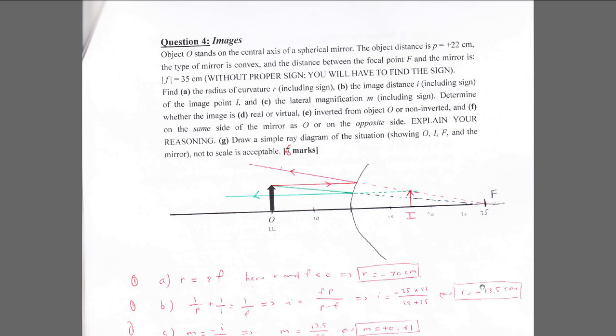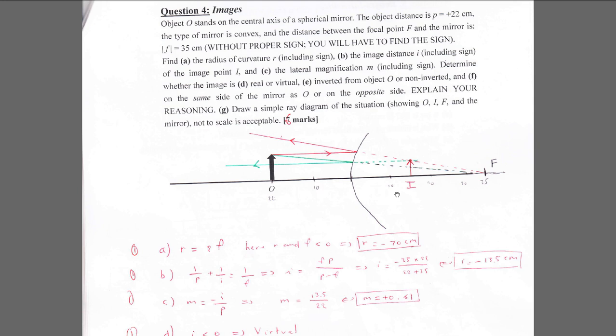The second question is about images. We have a convex mirror and we know p equals 22 centimeters. Try to make a drawing roughly to scale: put 0 here, 10 here, and ticks at 10, 20, 30. The focal length f equals 35, so you can mark that here.